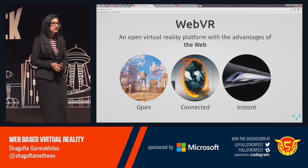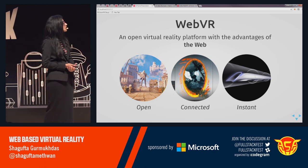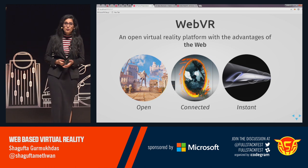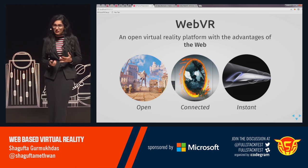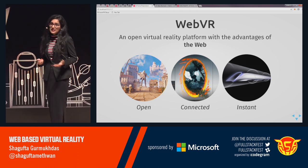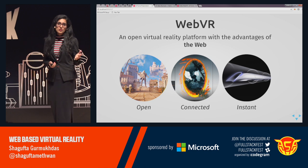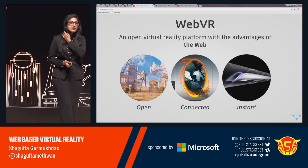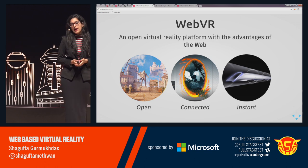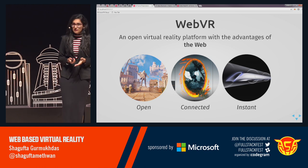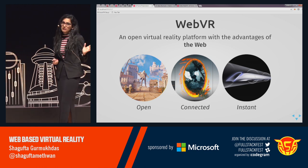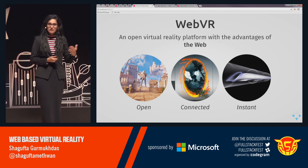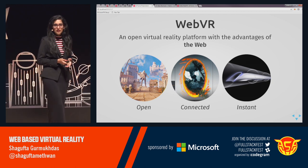Anyone can create anything just like they create their regular websites — with web technologies. It has all the properties of the web. It's open: anyone can publish, open source, open standards. It's connected: you can traverse worlds, scenes, and portals just like hyperlinks in the 2D web. And it's instant — you just click a link and you're there. You can just share it with the world, tweet it.